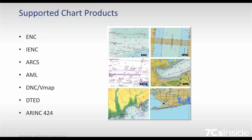Chart products supported by chart server are mainly all products based on the S57 standard — of course ENCs, but also inland ENCs, additional military layers, services, and the VPF-based products from the Americans: DNC and VMap. Then there is still one paper chart-based product, the Admiralty Raster Chart Service (ARCS), which is also supported. And there is digital terrain elevation data (DTED), which is more or less XYZ data displayed by color points, plus some aviation charts based on the RINEX 424 format.